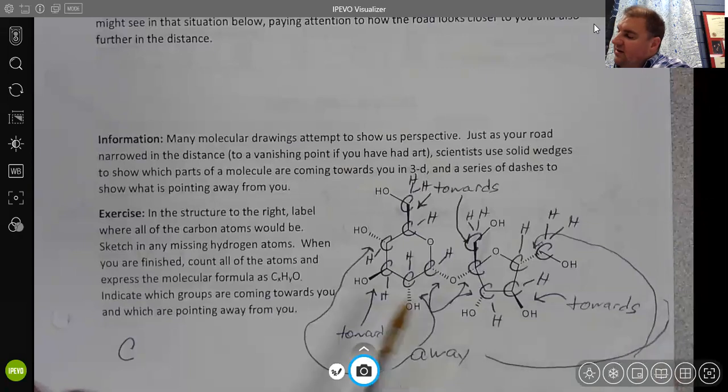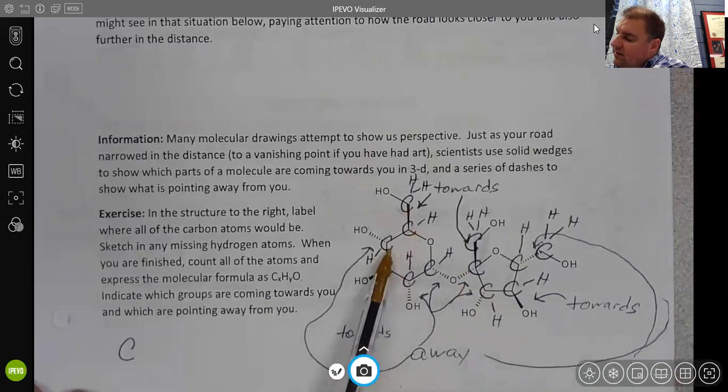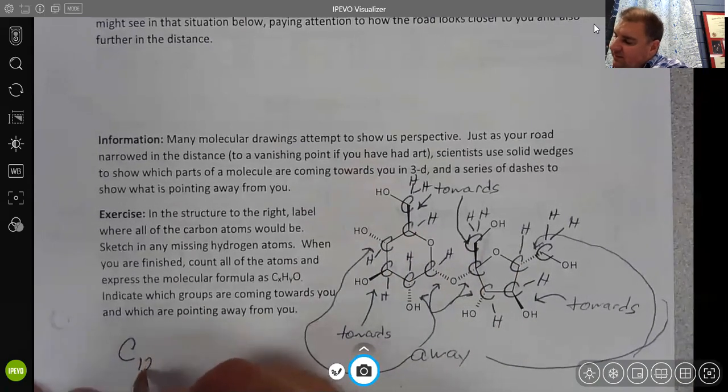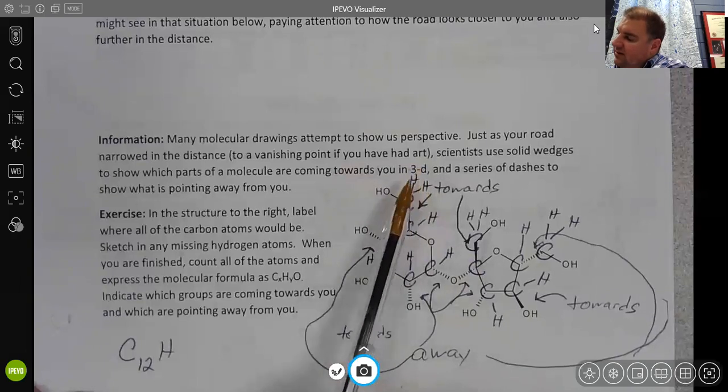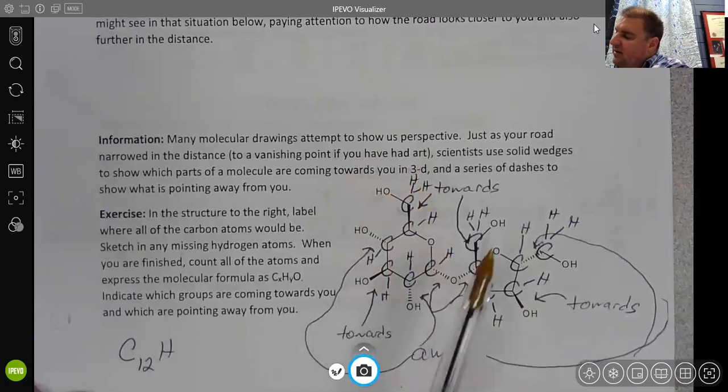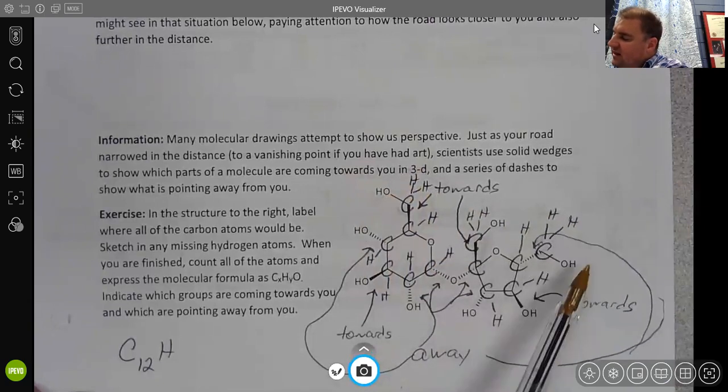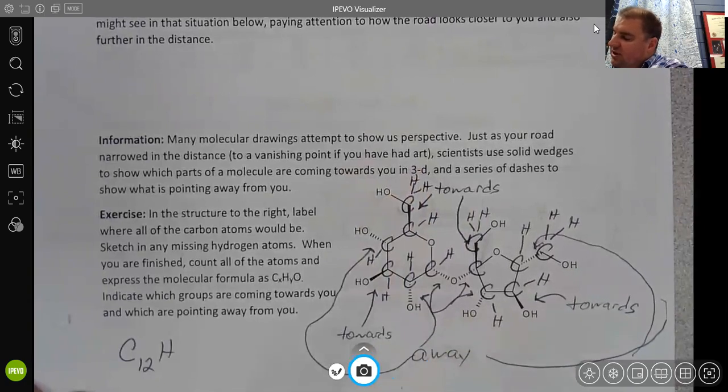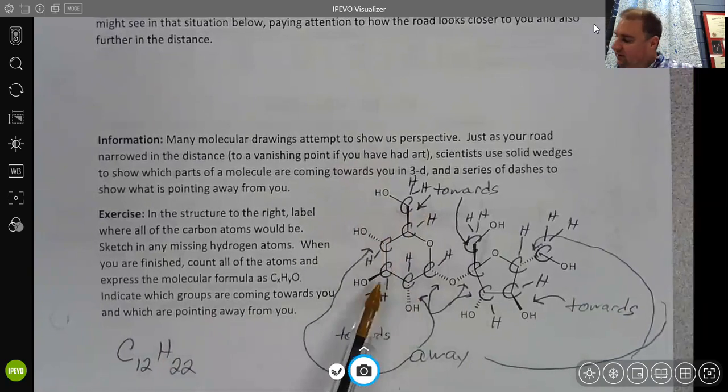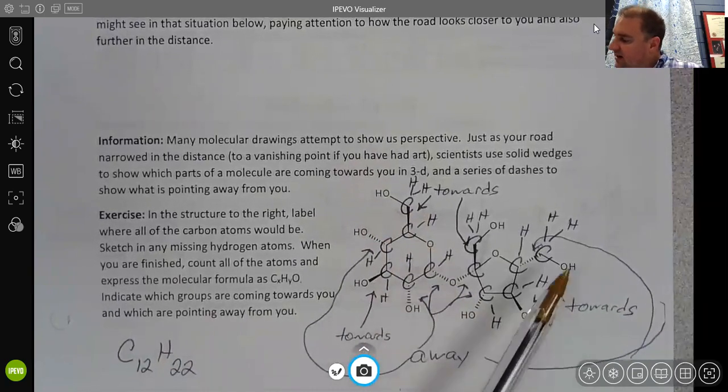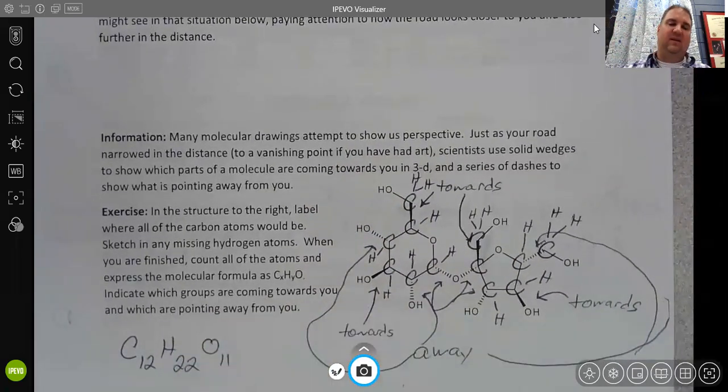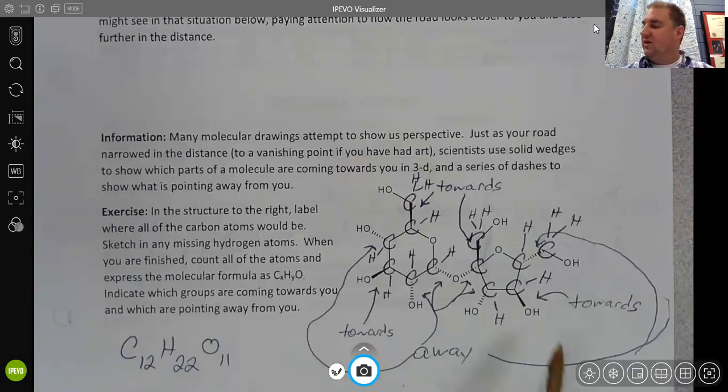So I count 1, 2, 3, 4, 5, 6, 7, 8, 9, 10, 11, 12 carbons. And 1, 2, 3, 4, 5, 6, 7, 8, 9, 10, 11, 12, 13, 14, 15, 16, 17, 18, 19, 20, 21, 22 hydrogens. And 1, 2, 3, 4, 5, 6, 7, 8, 9, 10, 11 oxygens. That would be the molecular formula for this whole structure.